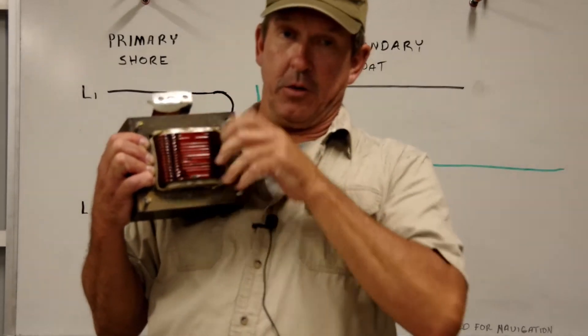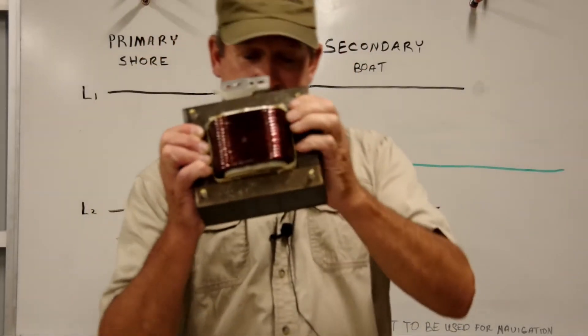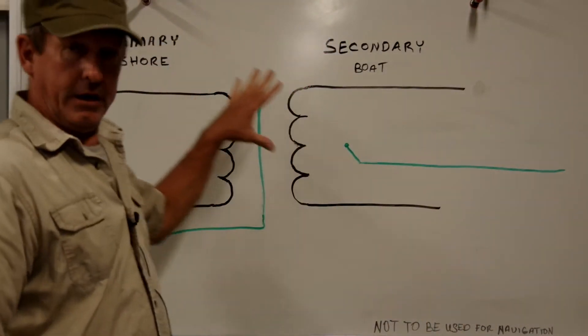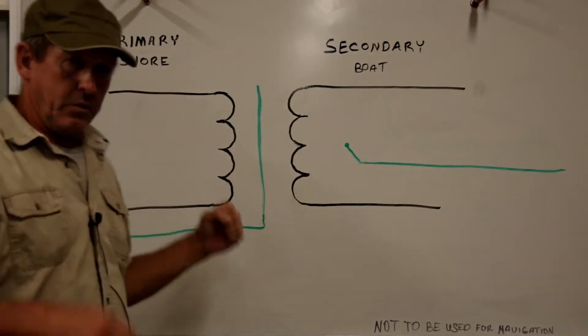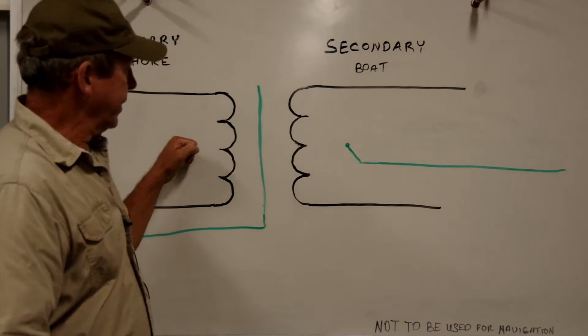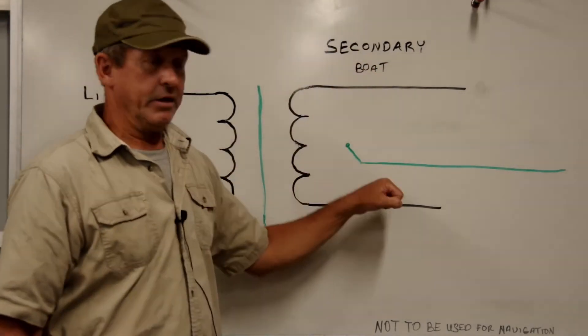There's primary and secondary windings and a big, very heavy steel core that they go around, and that is drawn out like this. So we have a set of windings which is our primary, and we have another set of windings which is our secondary.